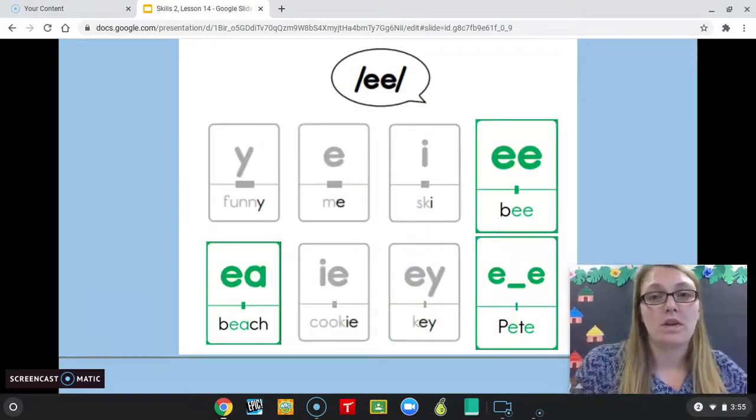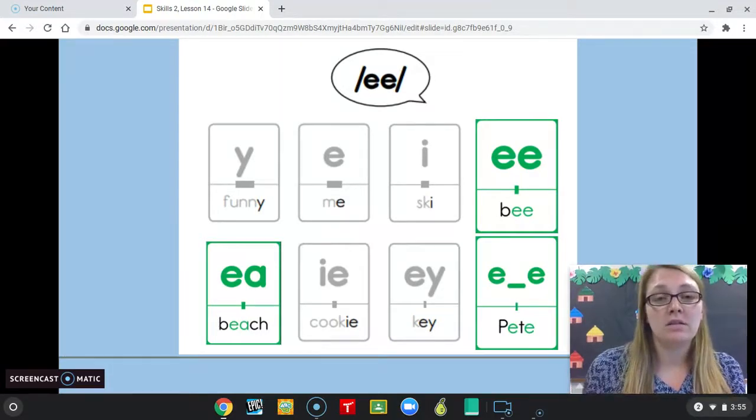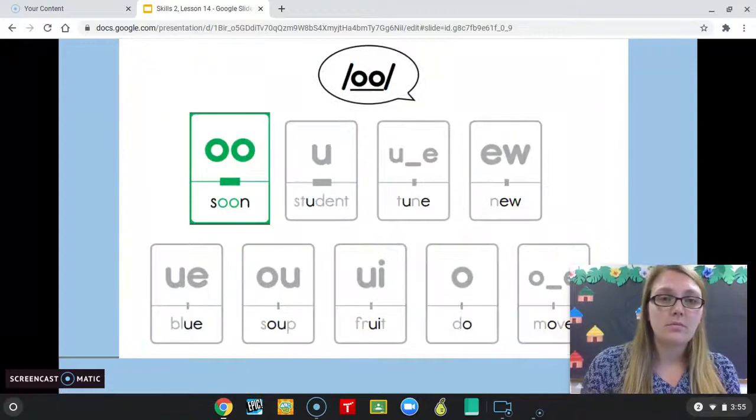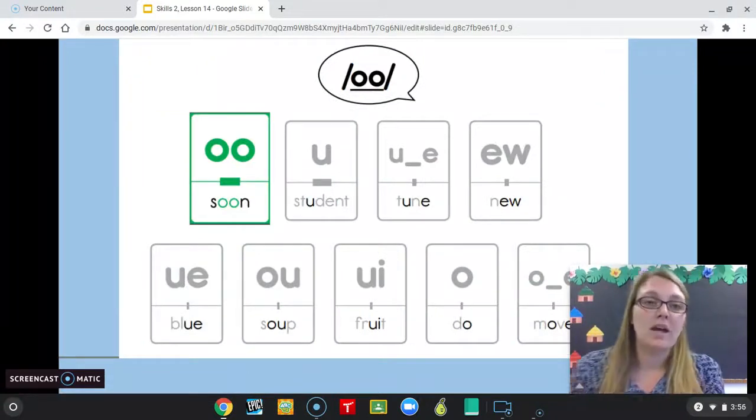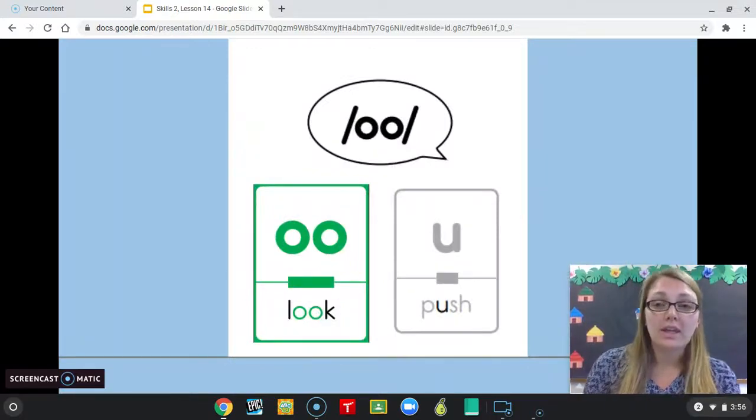We have three spellings for the long E sound. We have the E with the magic E at the end, EA, and EE. The double O spelling can either say oo like in soon, or uh like in look.